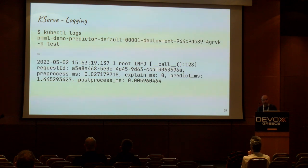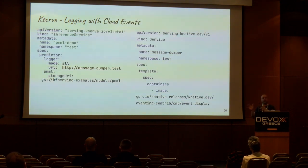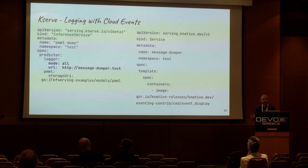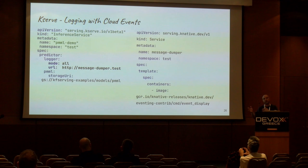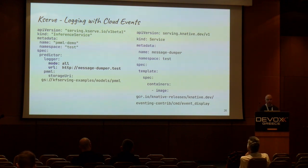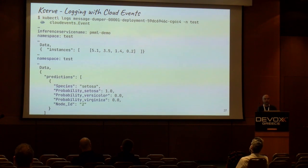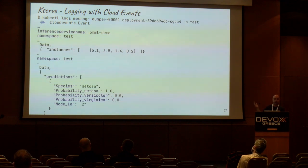Besides monitoring, you also have logging. KServe offers output about what is happening with your model — it emits logs in the container. If you have an integration with some third-party service, you can scrape the container and get the output. You can also dump the logs to some external service where you get the output in a more structured format, which you can use for further processing. For example, you can feed a concept drift detector to detect if the model has changed or the data distribution feeding the model has changed, creating more complex pipelines. Here is an example where logs are dumped to another KNative service and the log data is shown in a structured format.